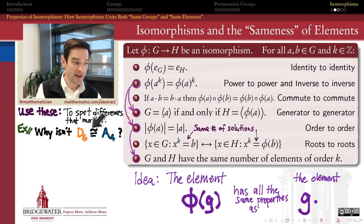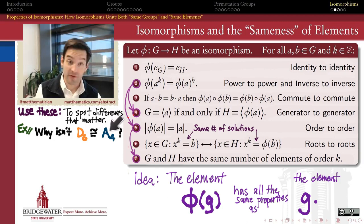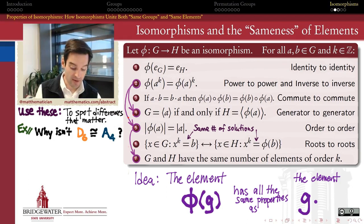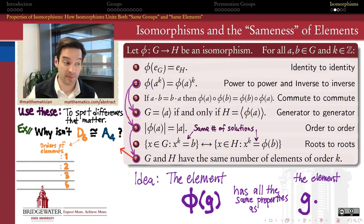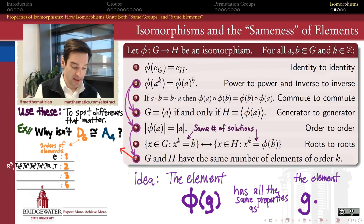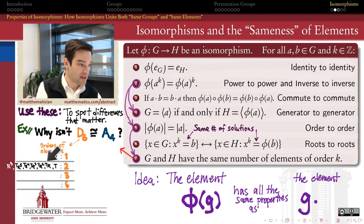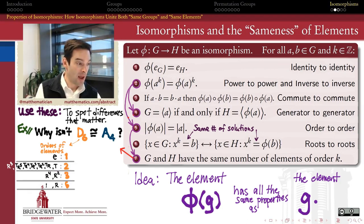Let's do one more example. Why isn't D6 — the dihedral group of the hexagon, 12 elements — isomorphic to A4, the group of even permutations of four elements? A4 also has 12 elements. Let's use property seven and look at the orders of elements inside these groups. In D6, there's one element of order one — always the identity. There are seven elements of order two, two elements of order three — R squared and R to the fourth, the 120-degree rotations of the hexagon — and two elements of order six, the 60-degree clockwise and 60-degree counterclockwise rotations. So that's the order structure of all the elements in D6.